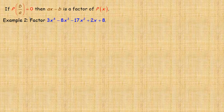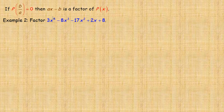This is the other part of the theorem. If you try a fraction b over a in the polynomial and get a remainder of 0, then ax minus b — where the denominator is the coefficient of x in the binomial — would be a factor. I could have shown this with the 3x minus 4 factor on the previous page, but let's take it one step at a time.